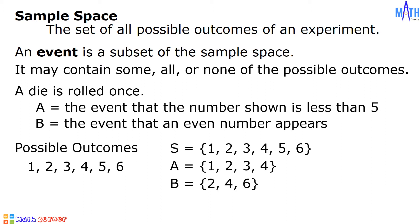Every outcome in A is also an outcome in S, and every outcome in B is also an outcome in S. This means that event A is a subset of the sample space S, denoted by this symbol. Similarly, event B is a subset of sample space S.